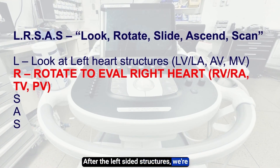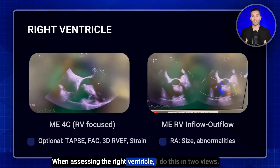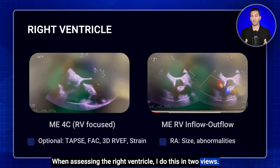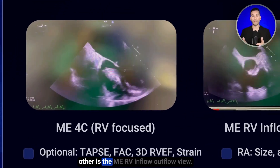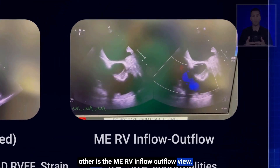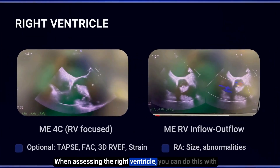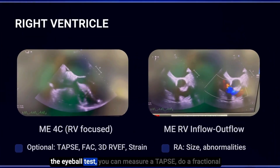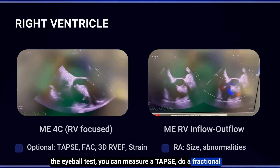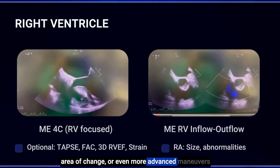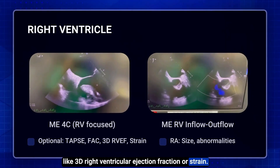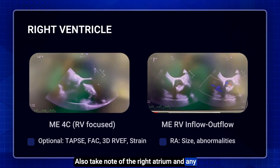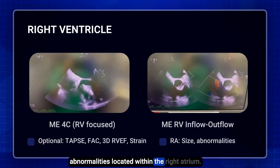After the left-sided structures, we're going to rotate to evaluate the right heart. When assessing the right ventricle, I do this in two views: the midesophageal 4-chamber view and the midesophageal RV inflow-outflow view. You can assess the RV with the eyeball test, measure a TAPSE, do a fractional area of change, or even more advanced maneuvers like 3D right ventricular ejection fraction or strain. I also take note of the right atrium and any abnormalities within it.